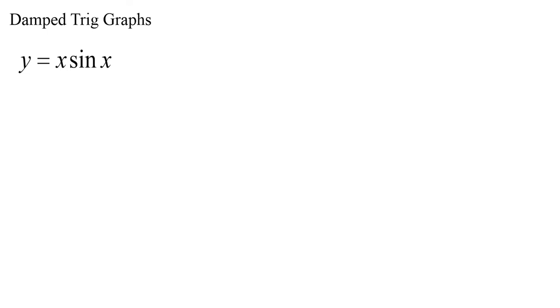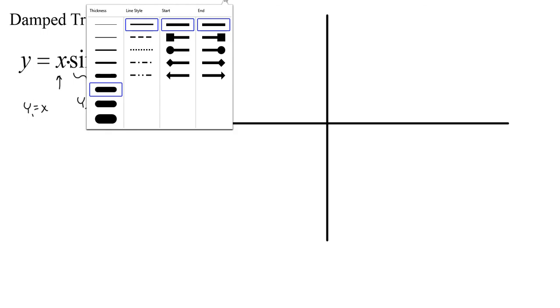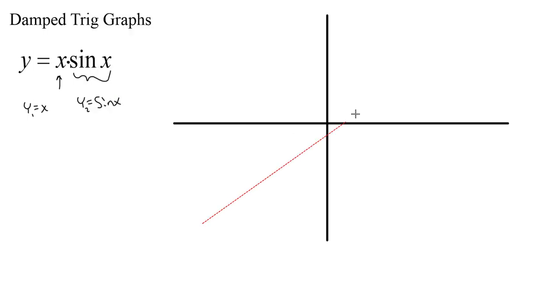Moving on to the next one, I want to talk a little bit about damped trig graphs and what that means. The way that I look at damped trig graphs is this is the product of two functions. This function right here is just y equals x and then this function right here is y equals sine x. So, I've got two functions, first function, second function. Now, this first function is fairly easy to graph. y equals x, that thing would look like this.